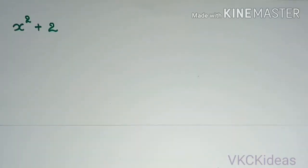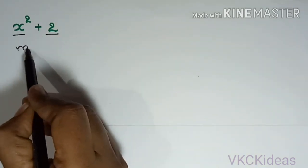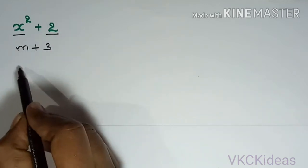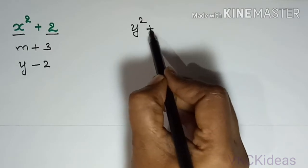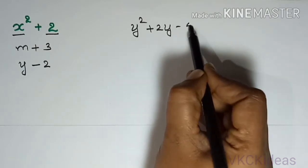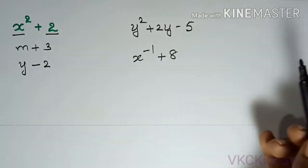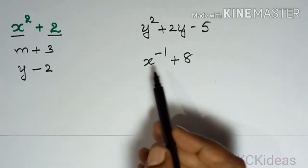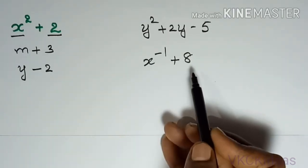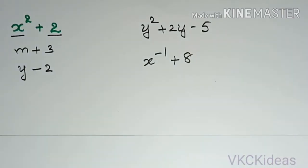Using these variables we express ideas like x² + 2, or m + 3, or y − 2. It can also be y² + 2y − 5, or x⁻¹ + 8. In all these cases we are expressing some mathematical ideas using these literals or variables, which are known as algebraic expressions.